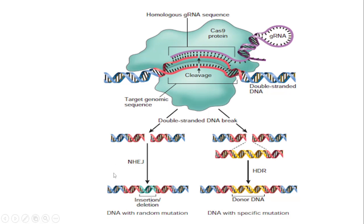Repair of the double-stranded DNA break occurs by two methods. Non-homologous end joining (NHEJ) is not a good type of repair because it can lead to errors, and later mutation and cancer can develop. The preferred method is homology-directed repair (HDR), where a homologous donor DNA attaches to the target DNA via CRISPR-Cas9 complexes and DNA is repaired using homologous recombination. This type of repair has the capacity to introduce precise changes in the DNA, and inherited genetic diseases can be repaired precisely by this mechanism.